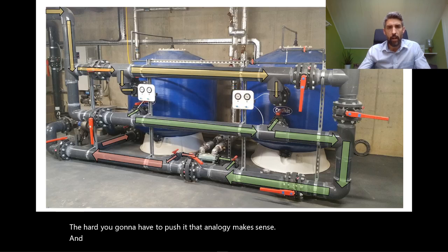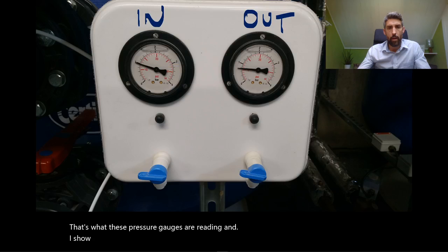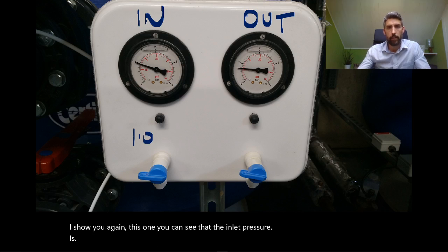That's what these pressure gauges are reading. If I show you again this one, you can see that the inlet pressure is 1.1 bar, the outlet pressure is 0.8 bar. So why is there a difference between the inlet pressure and the outlet pressure?